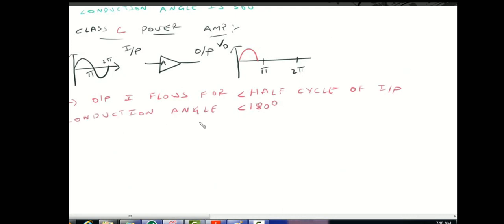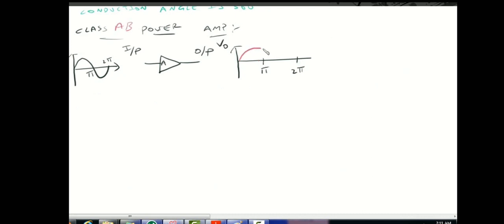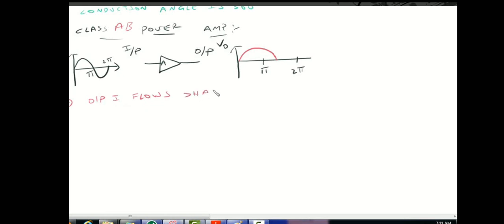Next is the Class AB power amplifier. Here is the biasing arrangement. The current flows for more than half cycle but less than a full cycle — so greater than 180 degrees and less than 360 degrees.